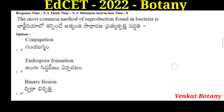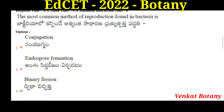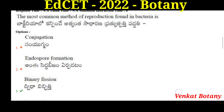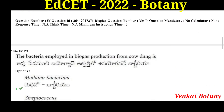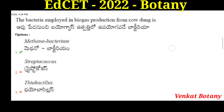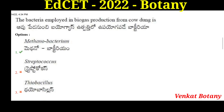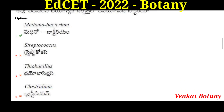The most common method of reproduction in bacteria is binary fission. The bacteria employed in biogas production from cowdung is Methanobacterium. Biogas is methane gas, produced by Methanobacterium.